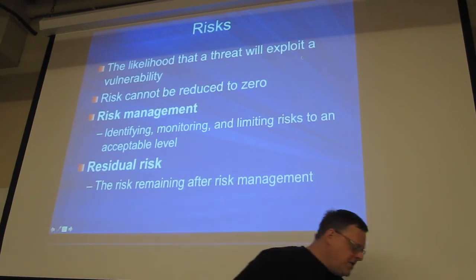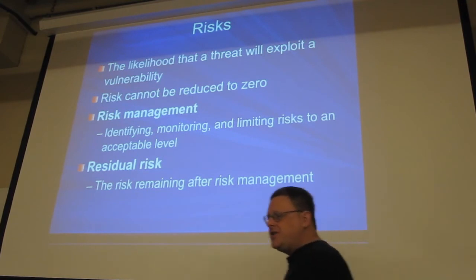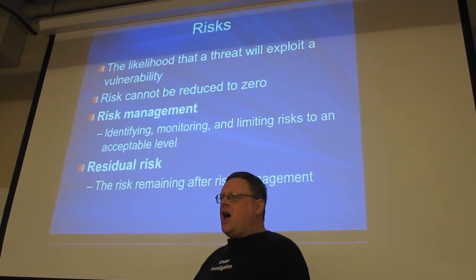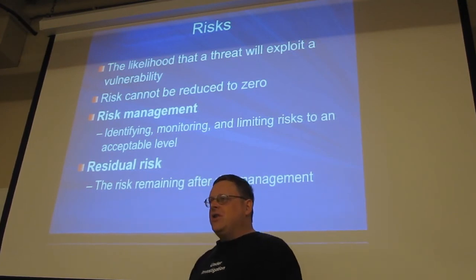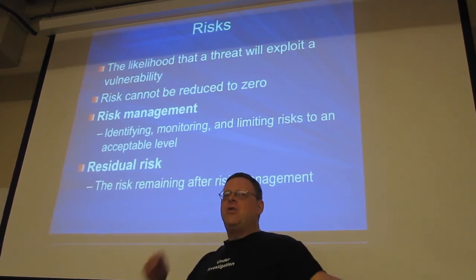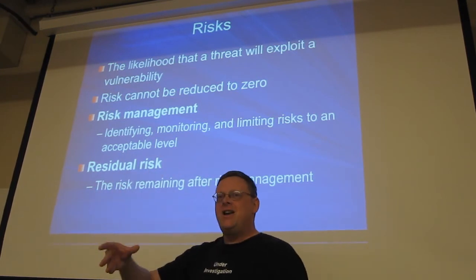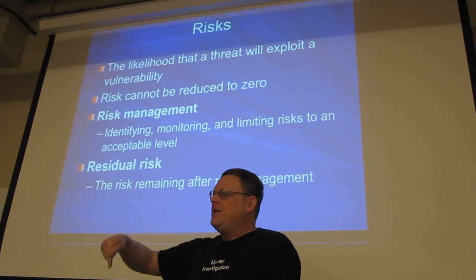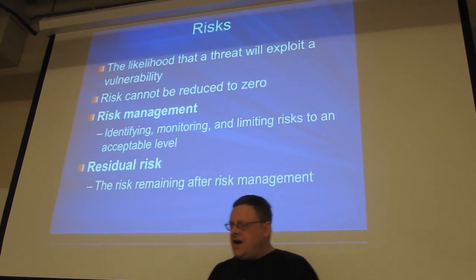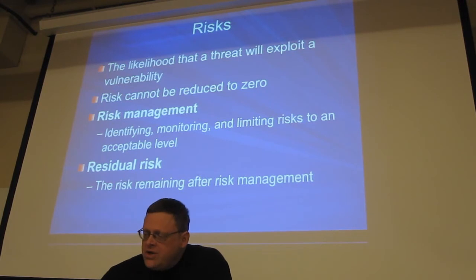A risk is something that has been boiled down to a measurement — now you have the likelihood that something bad will happen. Risk can never get down to zero. You can just take a bulldozer and collapse the door and get in — you can't afford anything that will stop that. You can only stop some burglars; you have to go back to your threat modeling. You choose what an acceptable amount of risk is — that's the point of risk management. You find out how much risk you want to tolerate and limit risks to an acceptable level. There is always some risk left over.